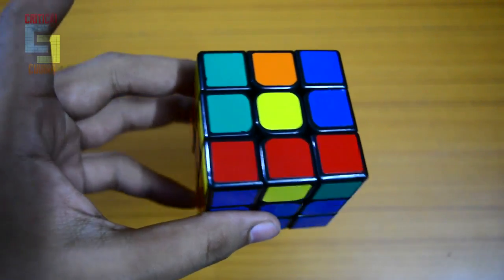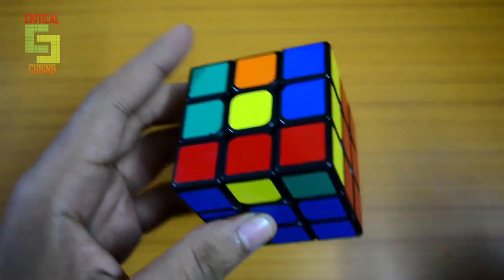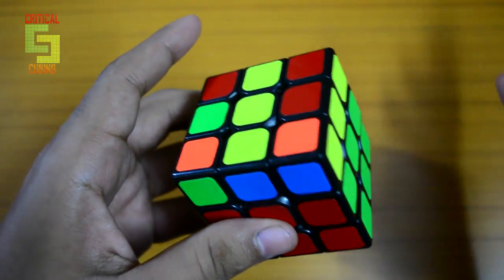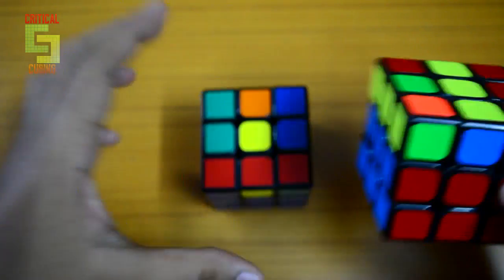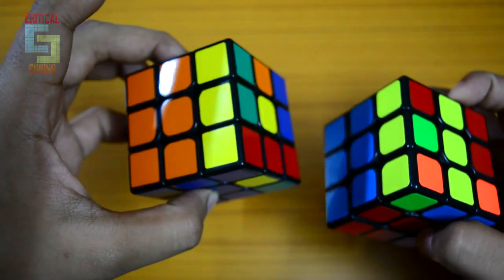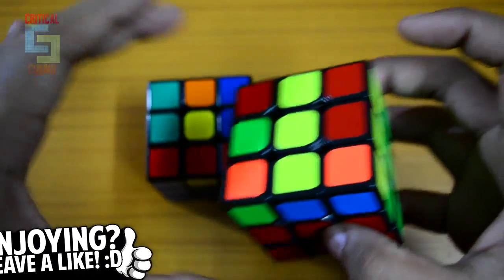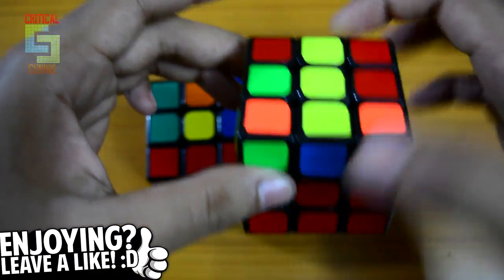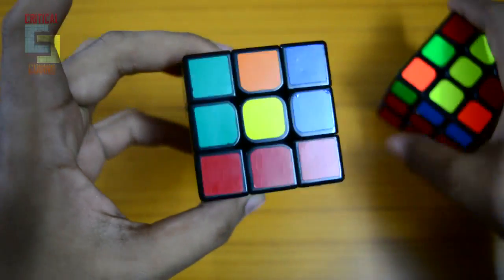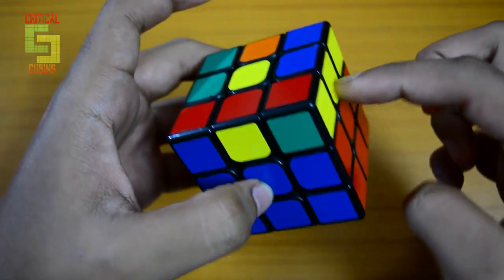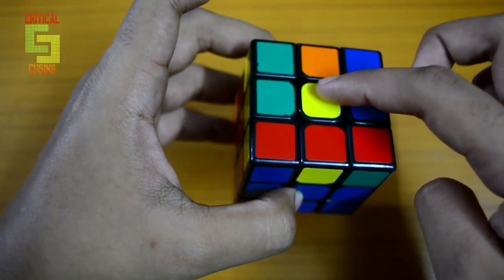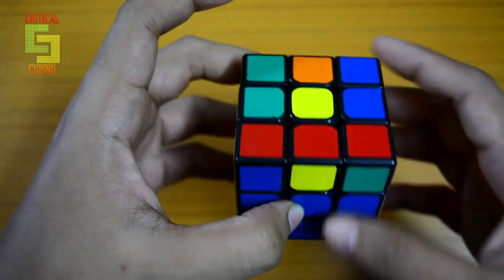This is the first dot OLL that we are going to learn - OLL number 1. This OLL is really similar to the line OLL which we learned previously. The dot OLL also has a 3x1 bar on your right as well as on your left, but it does not have the line on top. The edges on the dot OLL are towards the front and towards the back. So when you see this case with a 3x1 bar on your right and 3x1 bar on your left with the dot case on top, you know this is OLL number 1.